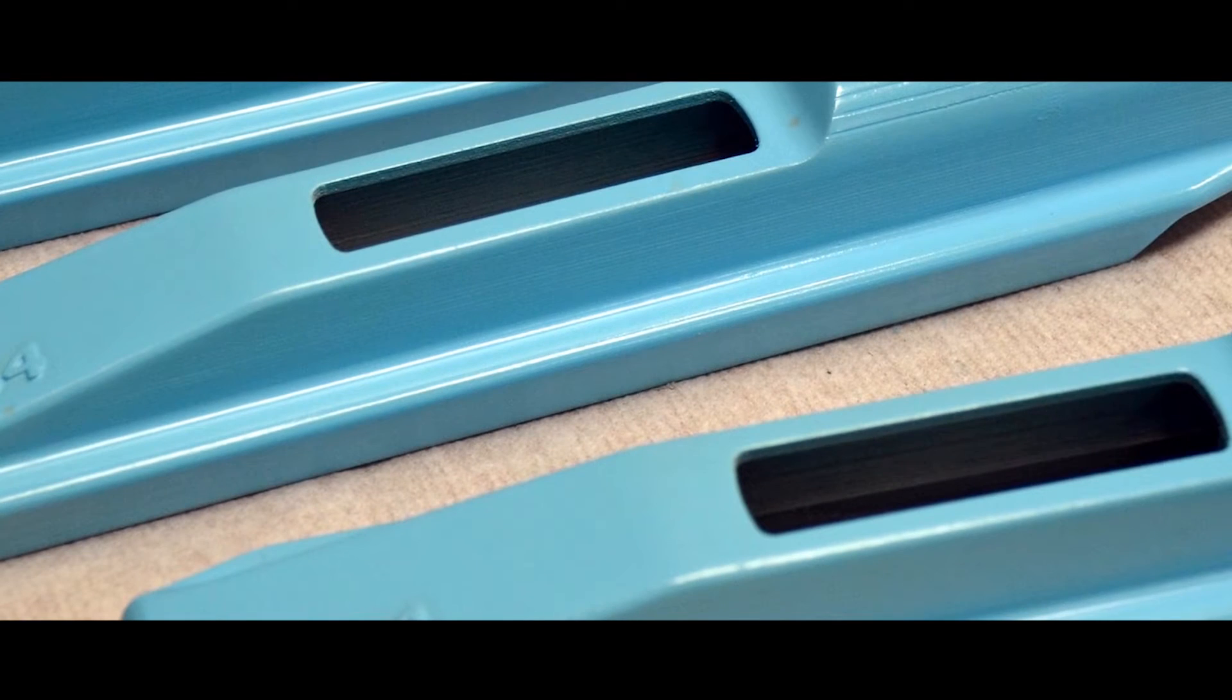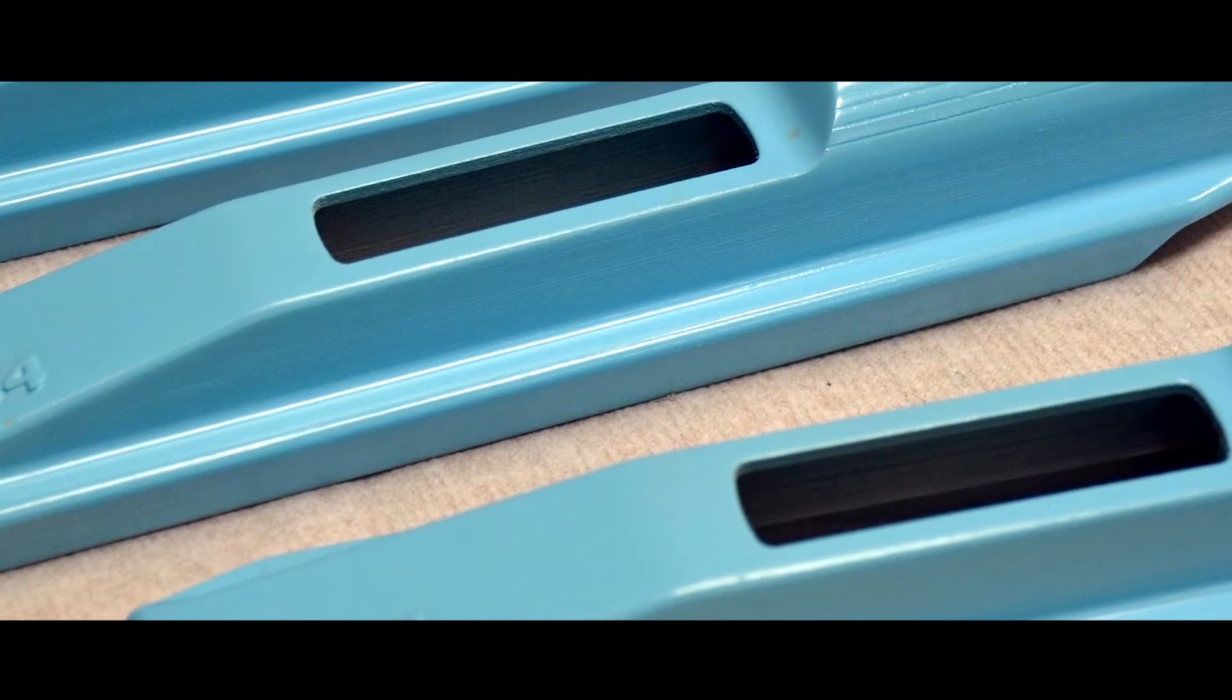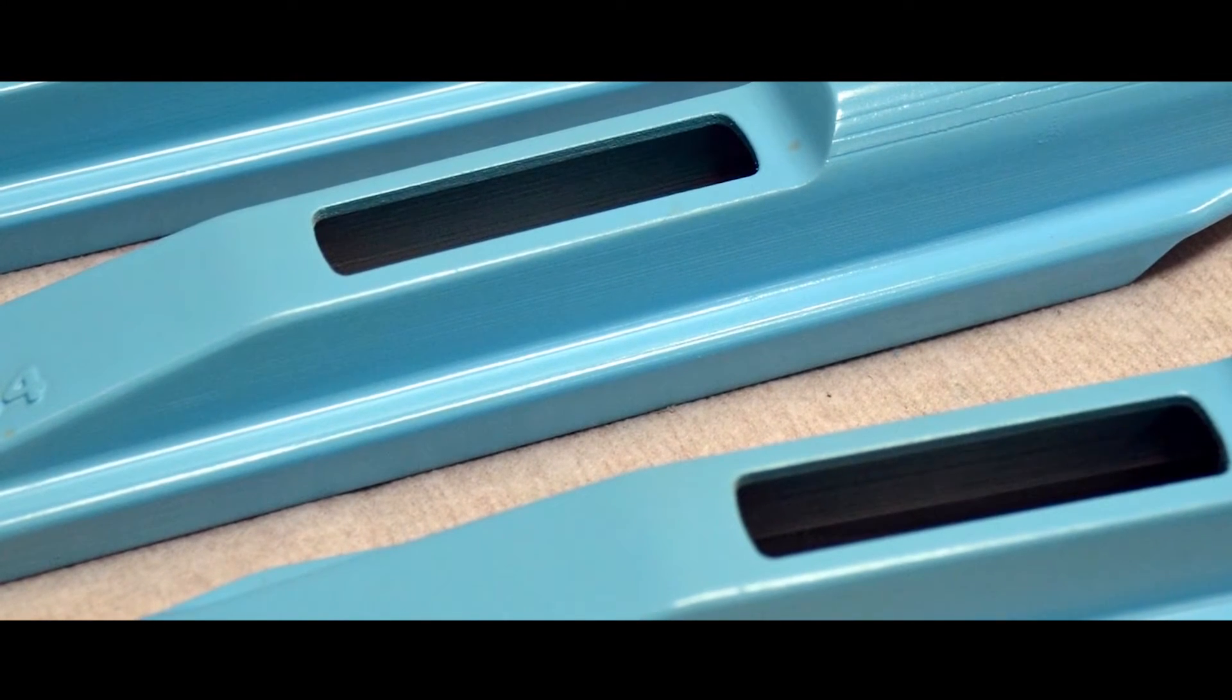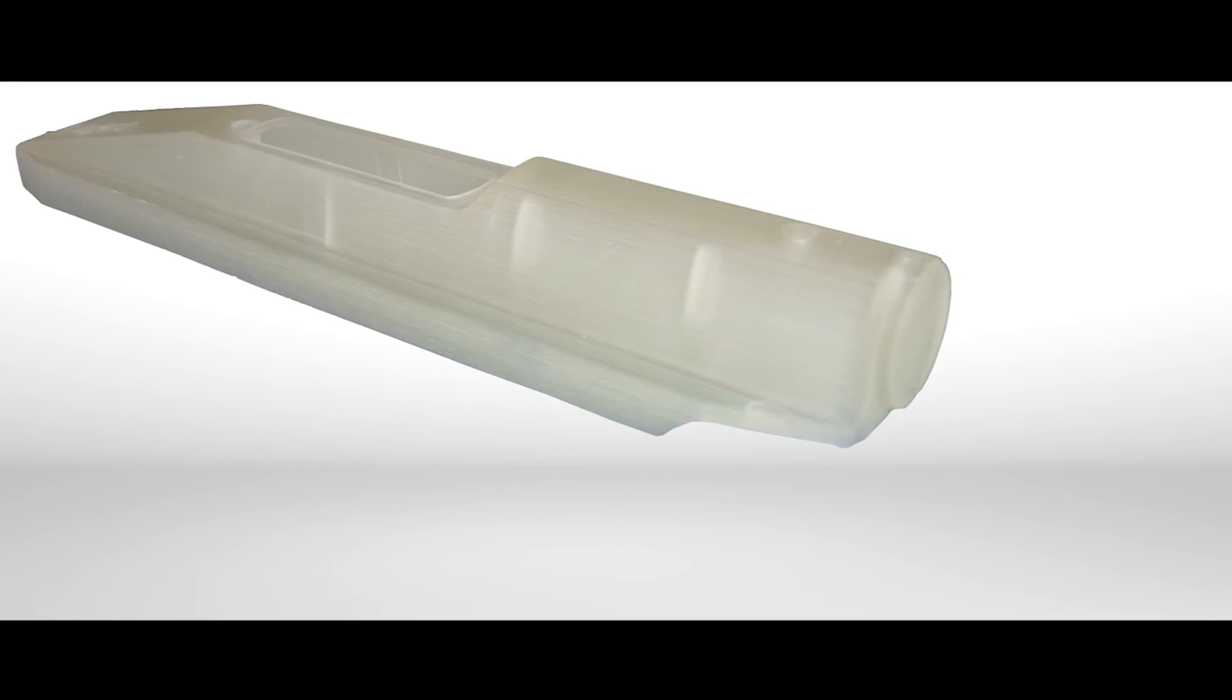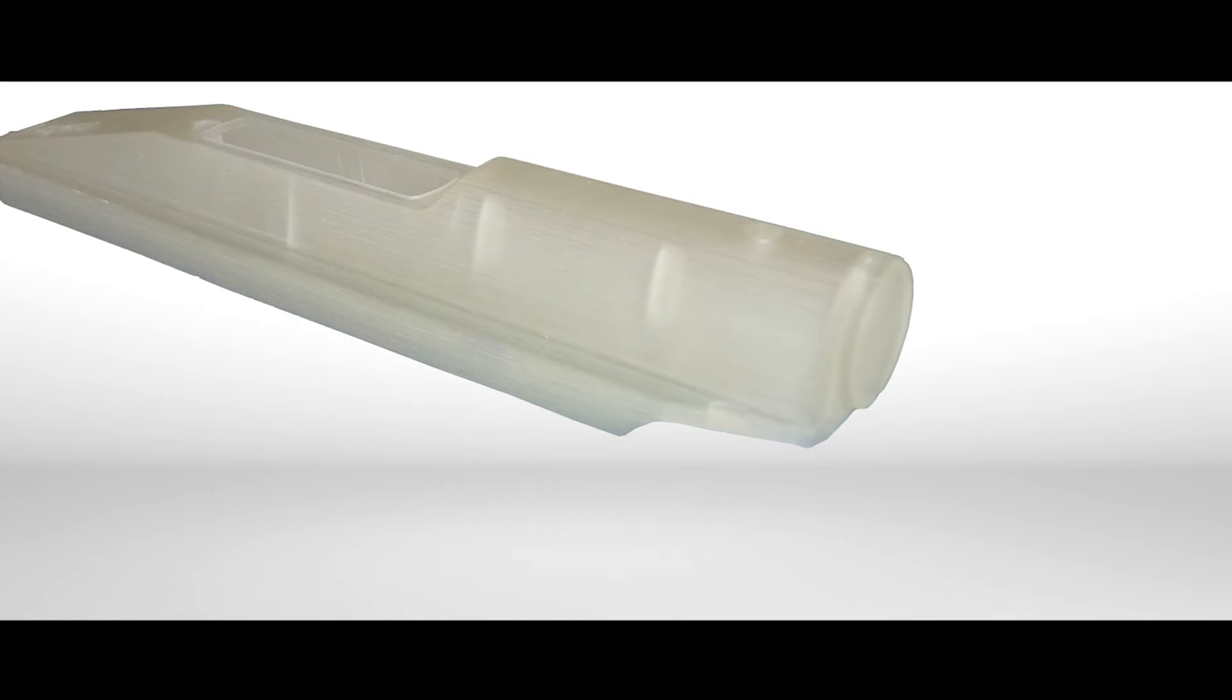To make cast urethane parts from silicone molds, simply substitute PolyJet patterns. No other changes are needed. Start with a CAD model of the part design and 3D print it with PolyJet. That's all there is to pattern making.